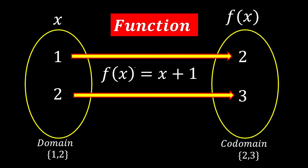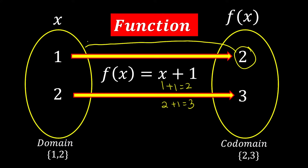Now let's go to a more formal approach. Say we have f(x) = x + 1 with a domain of {1, 2}. When we put in 1, we get 2; when we put in 2, we get 3. Now if we want the inverse function, inputting 2 should give us 1, and inputting 3 should give us 2.